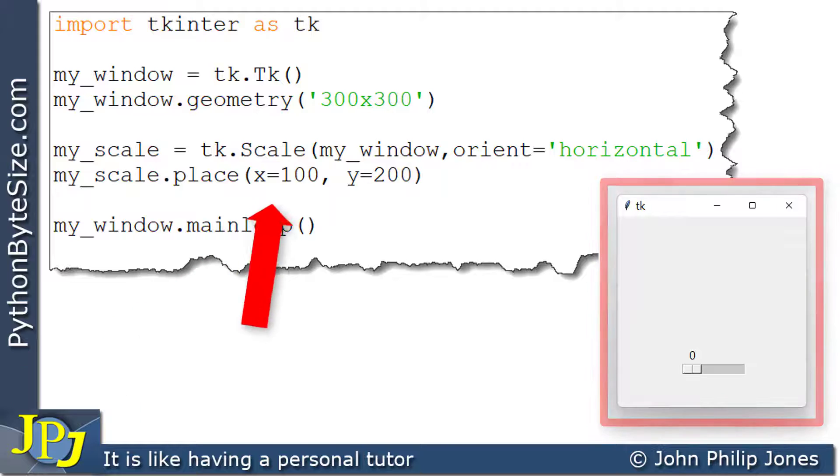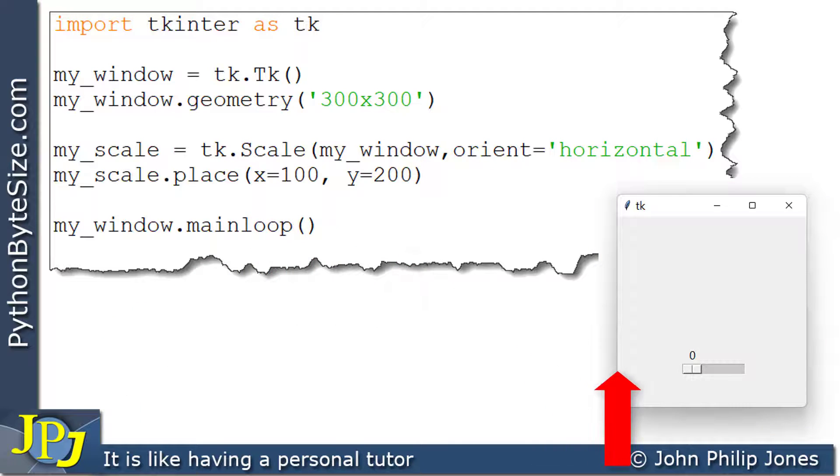Now x being 100 means I've come from here, which is 0 in the x position, along in this direction to 100. And if we have a look at y=200, I've come from here where y=0 and come 200 down to here. We can therefore see that this coordinate value of 100, 200 has placed the widget here.